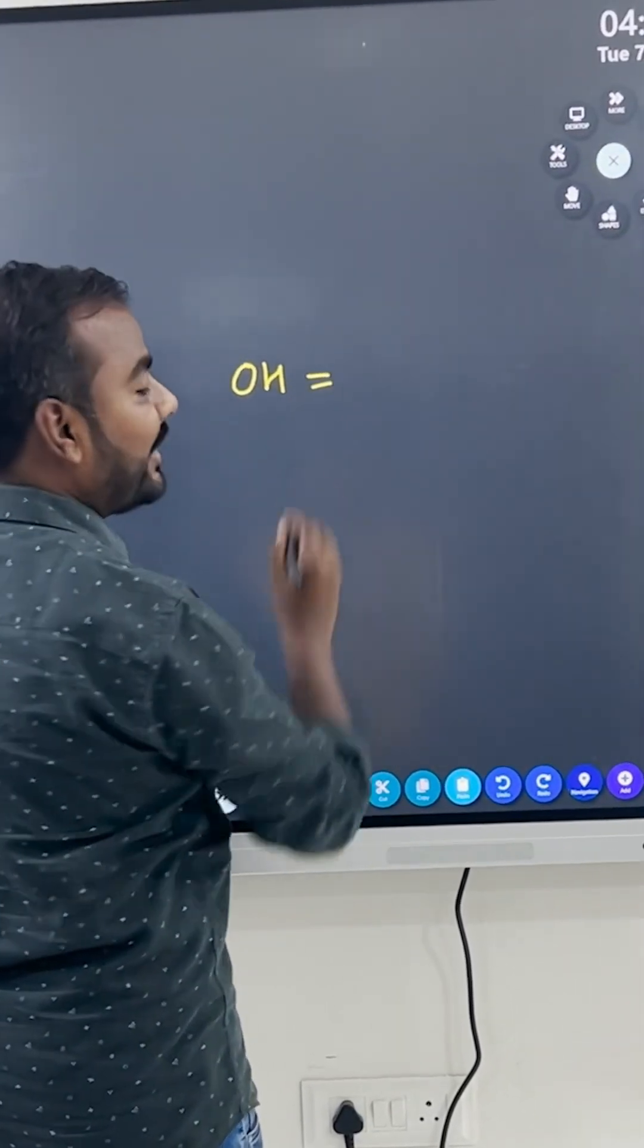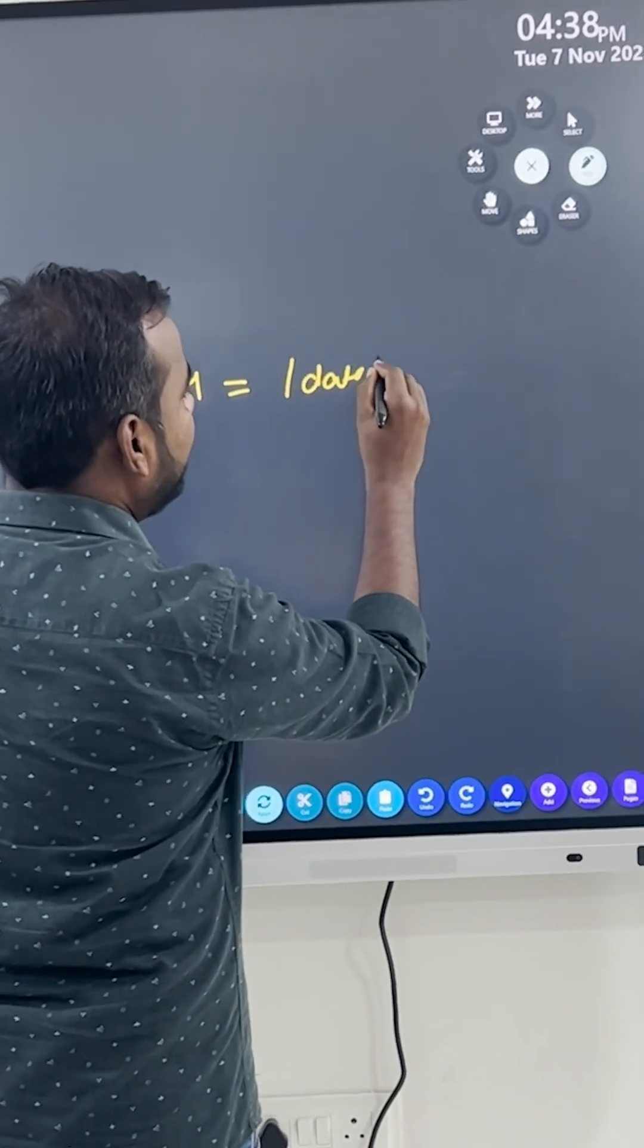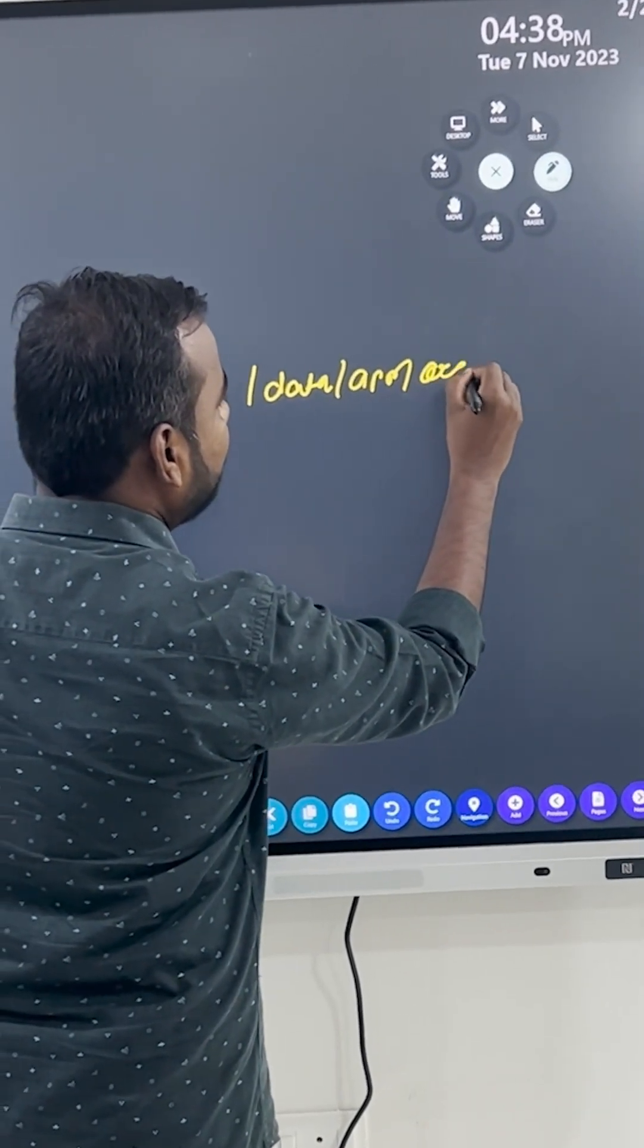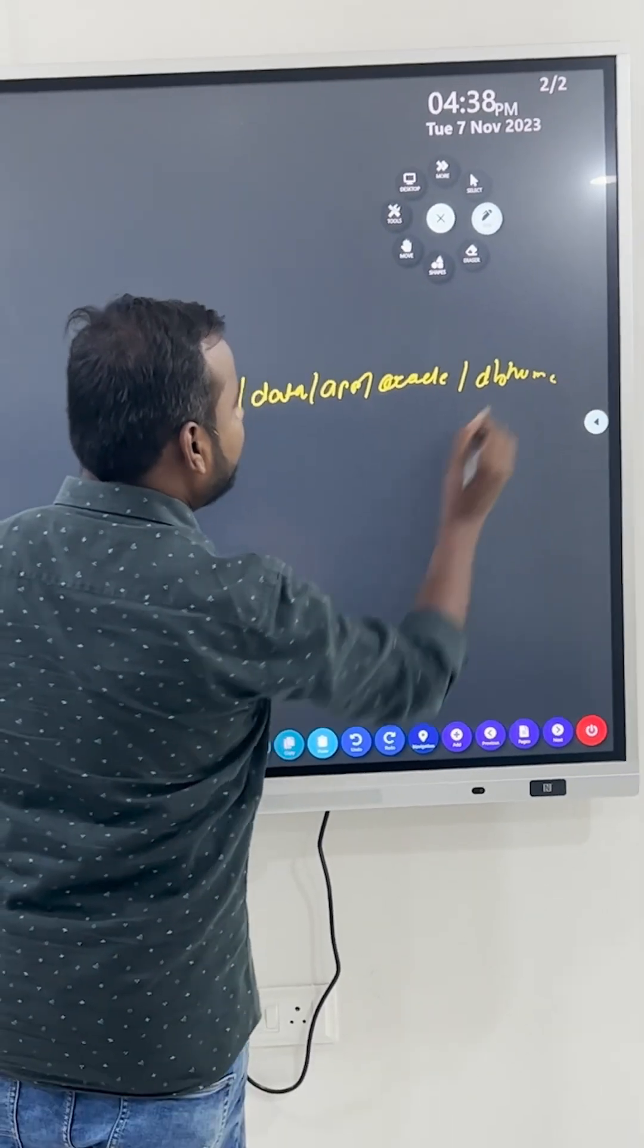So first of all, you need to set your Oracle Home. Okay, then let's say your Oracle Home is available here: data/app/oracle/product/19c/a/db_home will be there. Okay, this is the first thing you need to set.